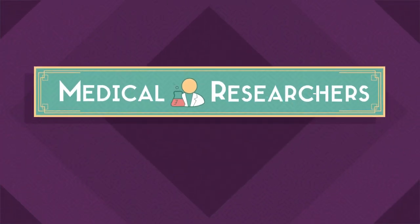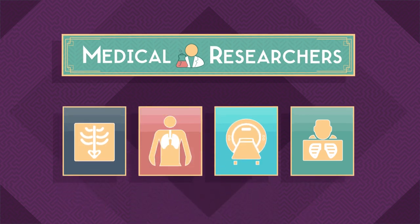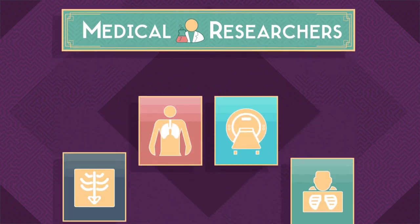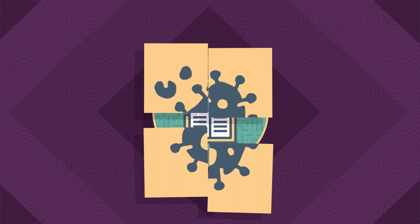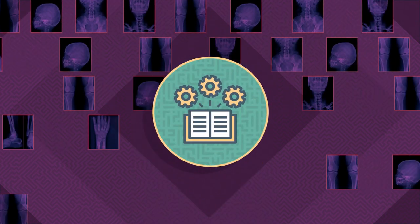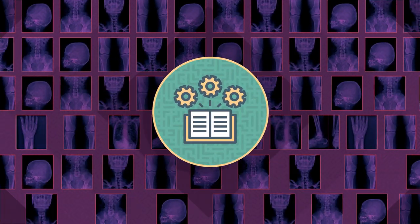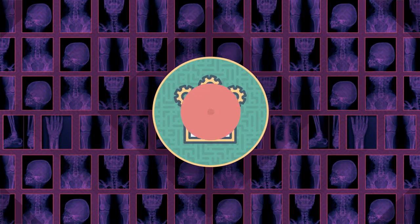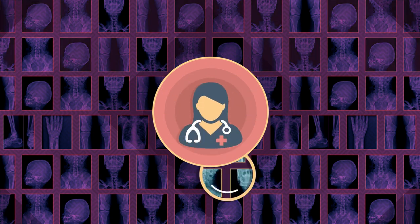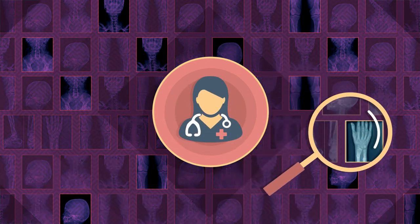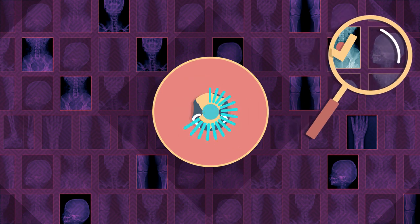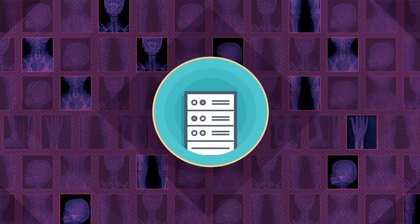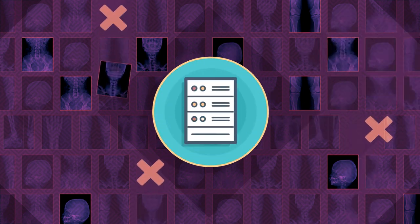Medical researchers can use medical images as training data to teach computers how to recognize and diagnose diseases. Machine learning needs hundreds and thousands of images and training direction from a doctor who knows what to look for, before it can correctly identify disease. Even with thousands of examples, there can be problems with the computer's predictions.